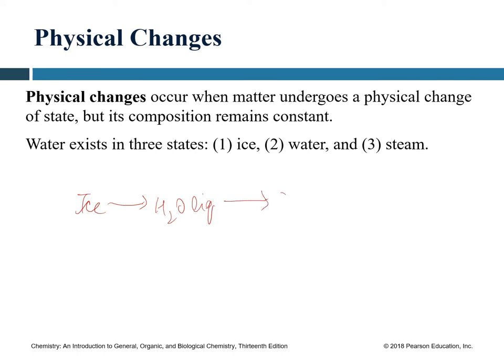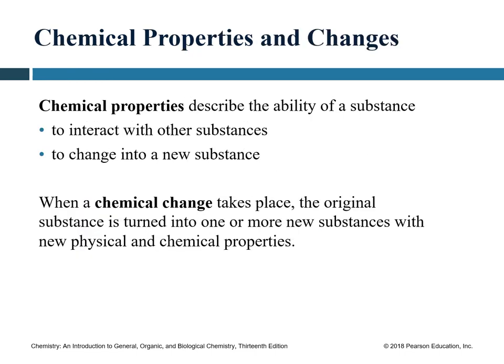If ice melts into liquid water and then liquid water is heated to form steam or water vapor, that is a physical change — not a chemical change. In ice, liquid water, and steam, the identity of the substance is H₂O throughout. As long as the chemical composition stays constant, it is a physical change.